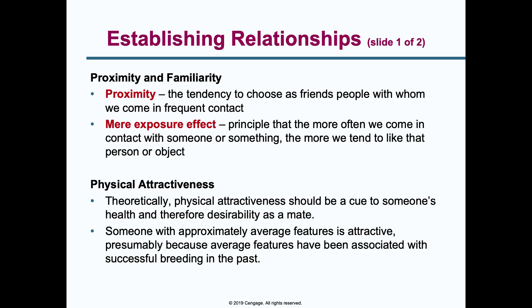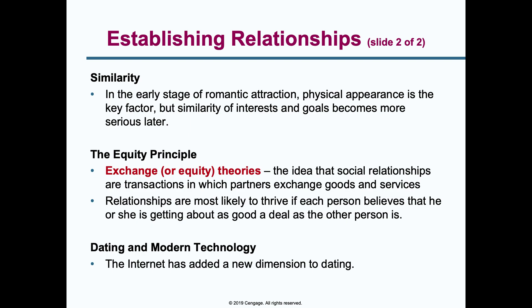Physical attractiveness is most important in the first hour after meeting someone. It's used as a cue to someone's health and therefore desirability as a mate. Average features tend to be attractive to most people because they're associated with good breeding potential. Similarity is another factor: in early romantic attraction, physical appearance is key, but over time how similar people are in interests and goals becomes more important.